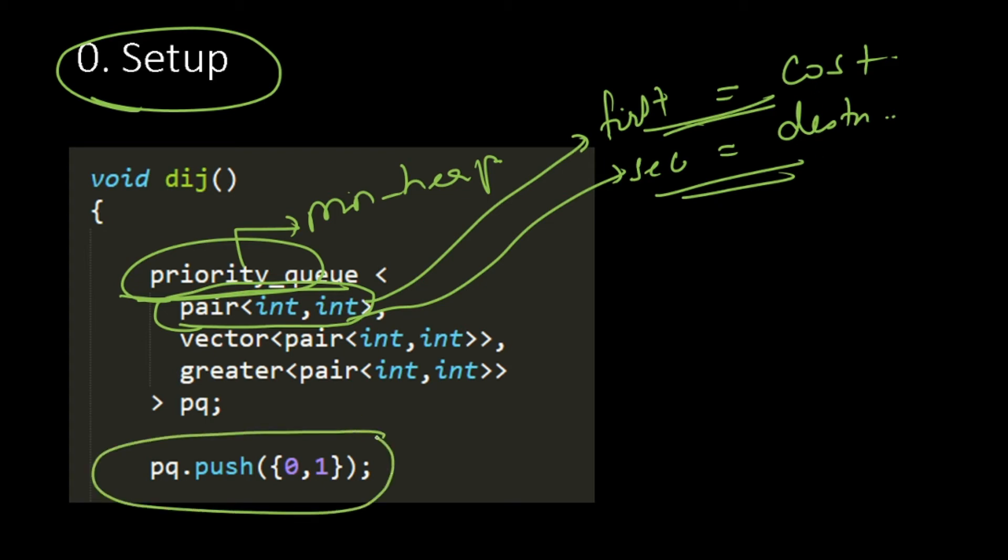Initially, I will push, I will initialize my heap with 0,1. What this means is, I can reach destination 1 at cost 0. Fair enough.